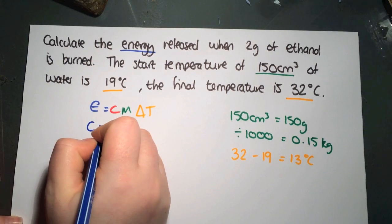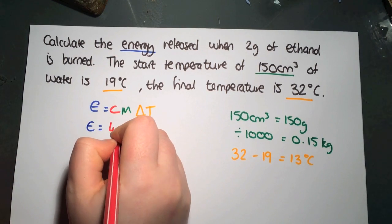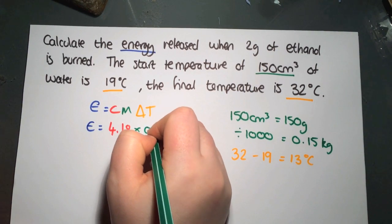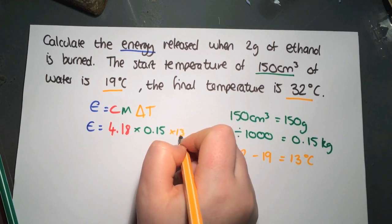So here we're going to have E equals, now C is again coming straight out of the data book, 4.18, multiply it by the mass, 0.15, multiplied by 13.